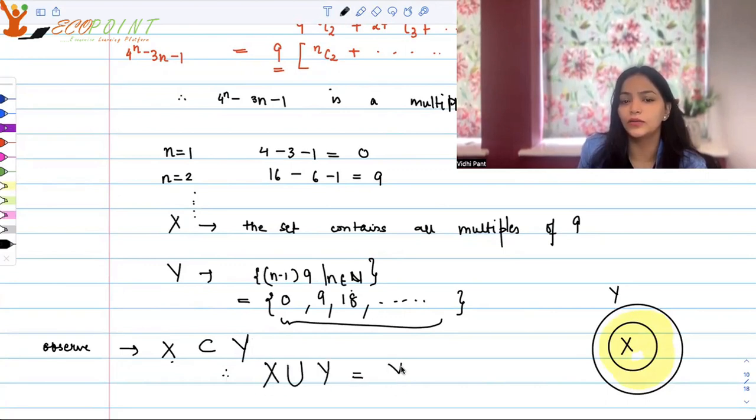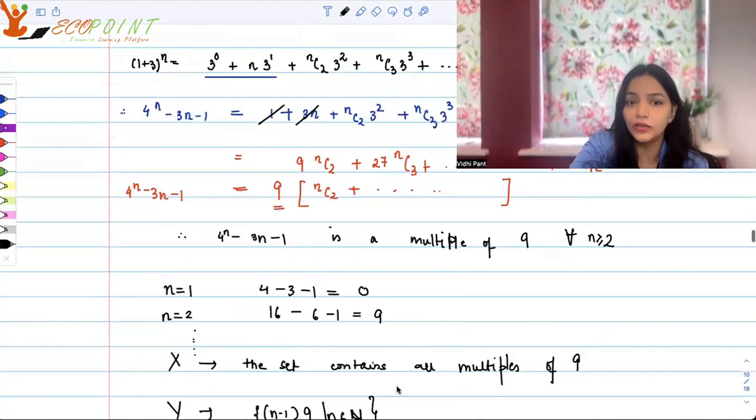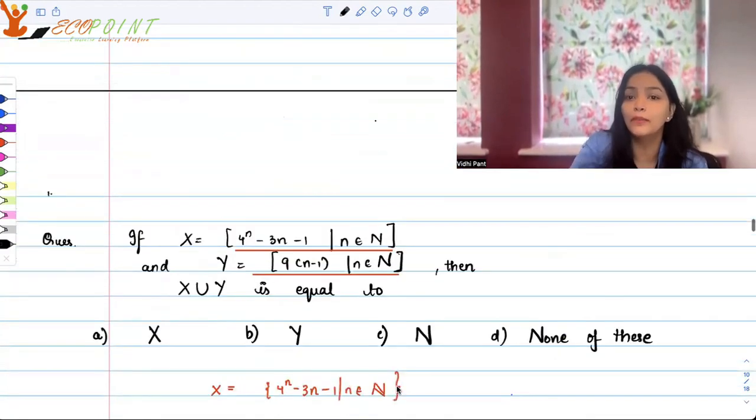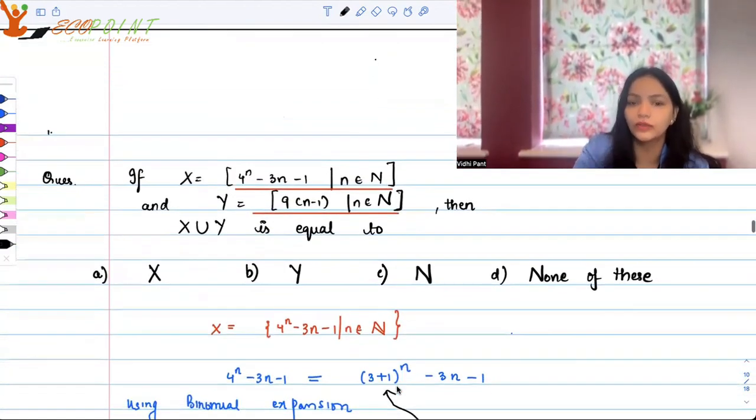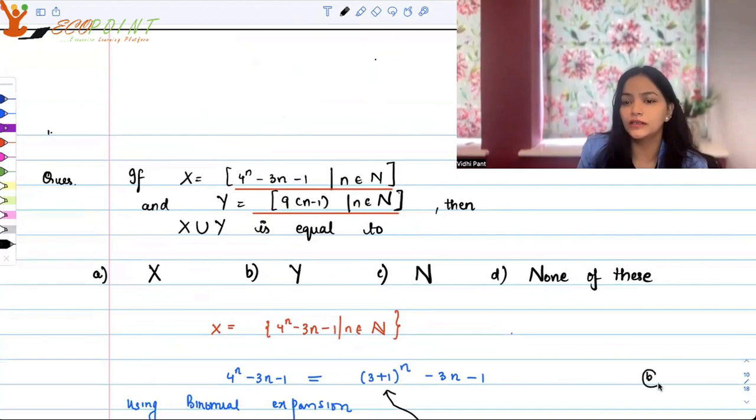If that is the case, then what will the union be? The superset is the union, so therefore X union Y is equal to just Y, and we do have that option. B is the correct option.